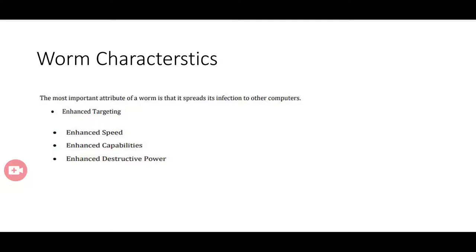We can define worm characteristics using four important attributes: enhanced targeting, enhanced speed, enhanced capability, and enhanced destructive power.